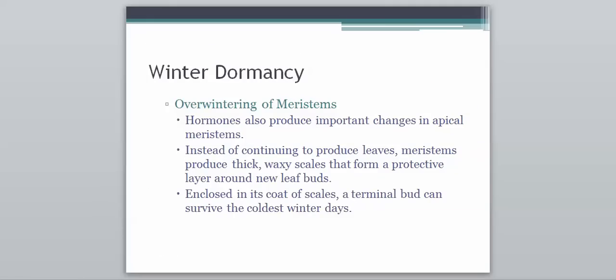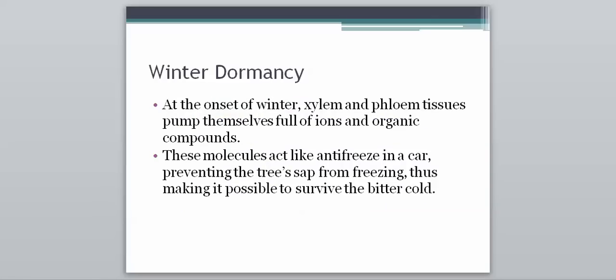Then there is the overwintering of meristems, which is another important step since meristems are our new growing regions. Hormones produce important changes in apical meristems: instead of continuing to produce leaves, meristems now produce thick, waxy scales that form a protective layer around new leaf buds. Enclosed in this coat of scales, a terminal bud can survive the coldest winter days. At the onset of winter, xylem and phloem tissues pump themselves full of ions and organic compounds that act like antifreeze in a car, preventing tree sap from freezing and making it possible to survive the bitter cold.